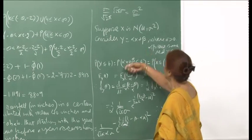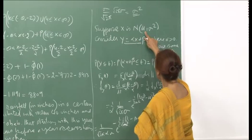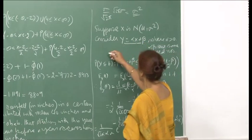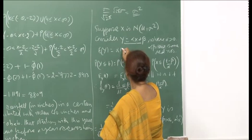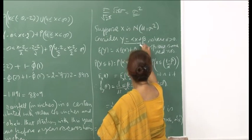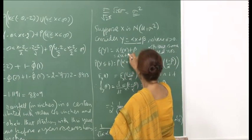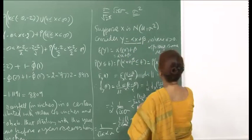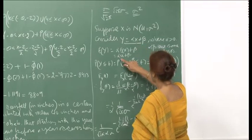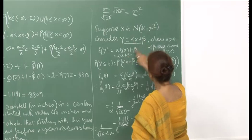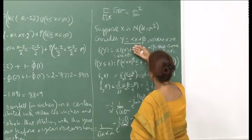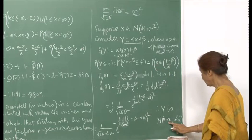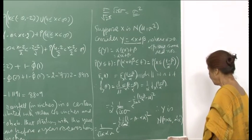So therefore, you see that if you make this transformation where x is N(μ, σ²), then for y the expectation will become αμ + β. The variance will be — since the constant β will cancel and α will come outside and become squared — either way you can verify that the mean will be β + αμ and the variance will be α²σ².